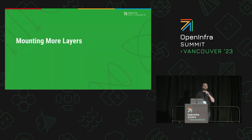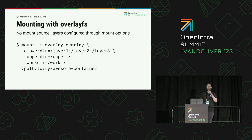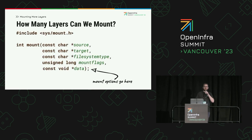I'd like to start with a motivating example: increasing the limit on how many container image layers can be mounted. Moby typically uses the overlay file system to compose the layers of a container image. When mounting an overlay FS, the source argument is ignored and the source directory paths are passed in through the mount options. There is no hard limit on the number of layers in an OCI image, but how many layers can we mount at a time with overlay FS?